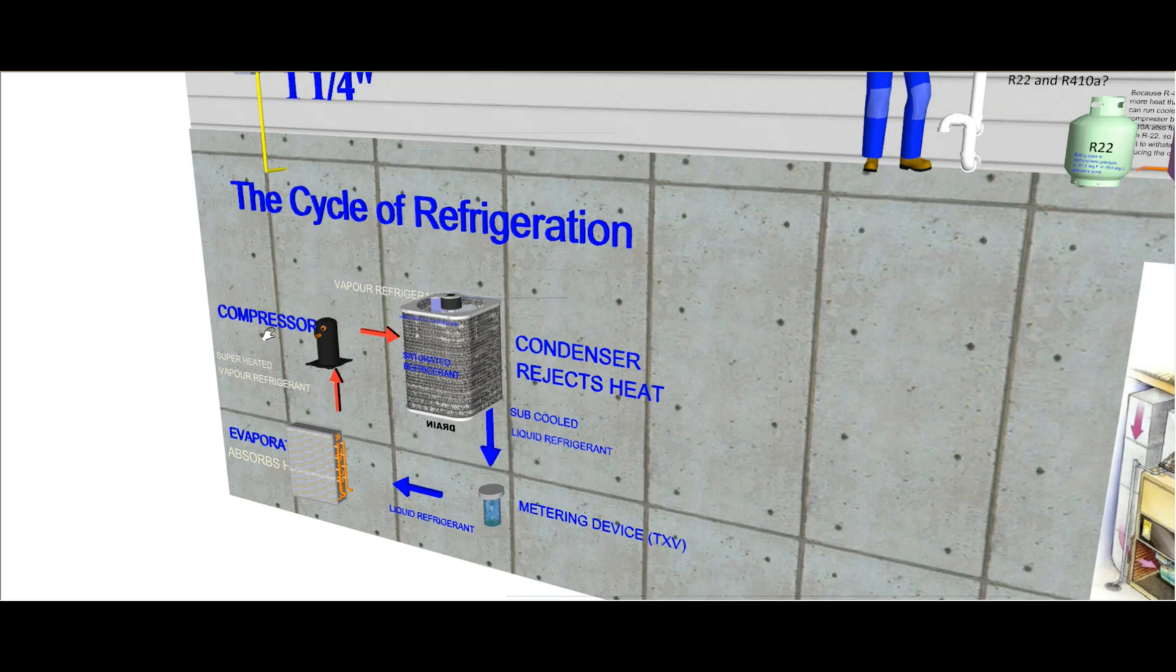We went through the main four components. The heart of the cycle of refrigeration is the compressor, so we started with the compressor which is located in the condenser, then it goes through the condenser through the metering device and then back to the evaporator coil which is located in the furnace. So I did that basic video.